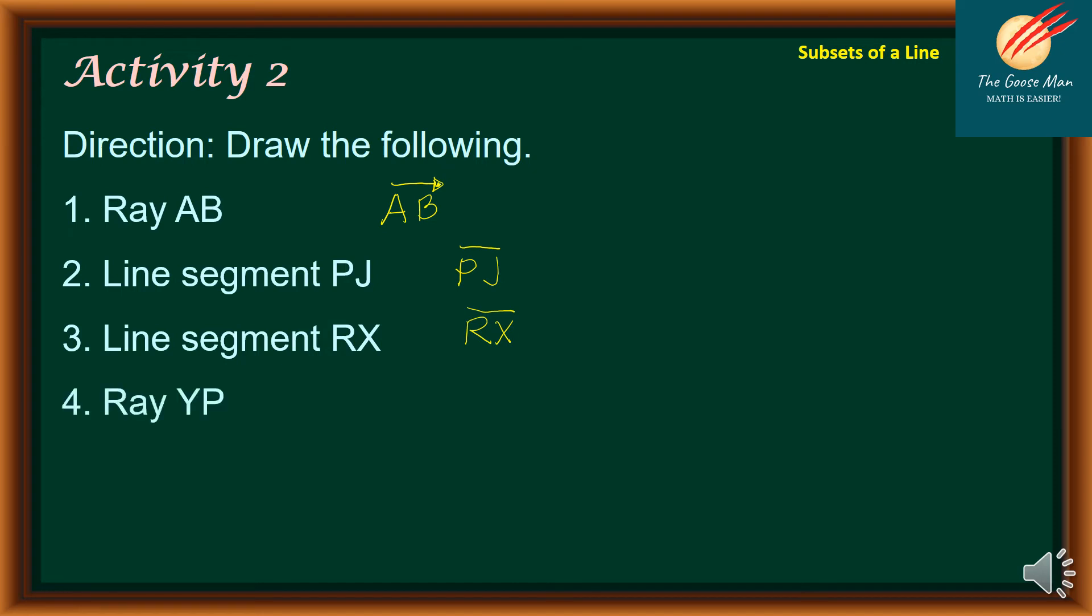Number four, ray YP. So we have YP. I start with the endpoint Y going to the direction of P.